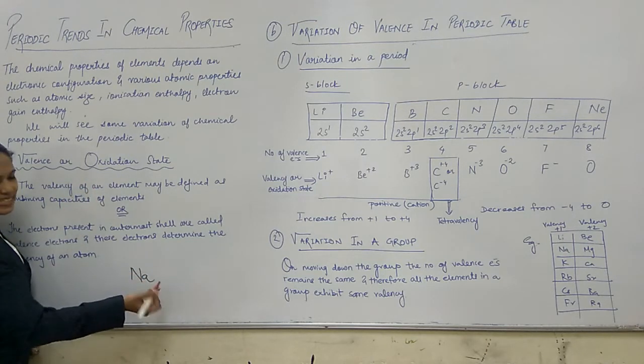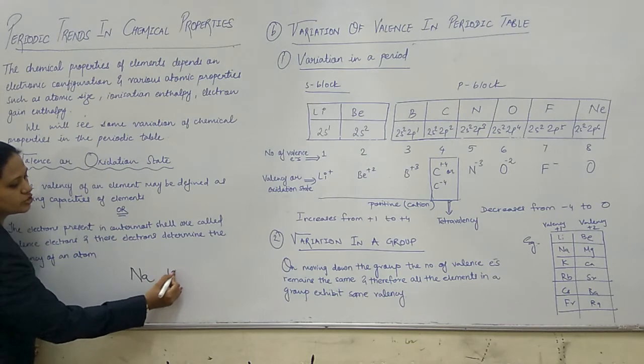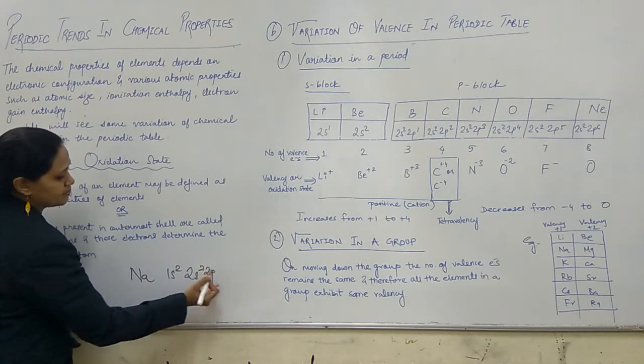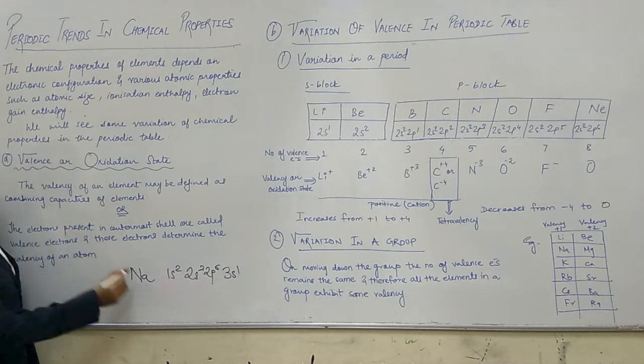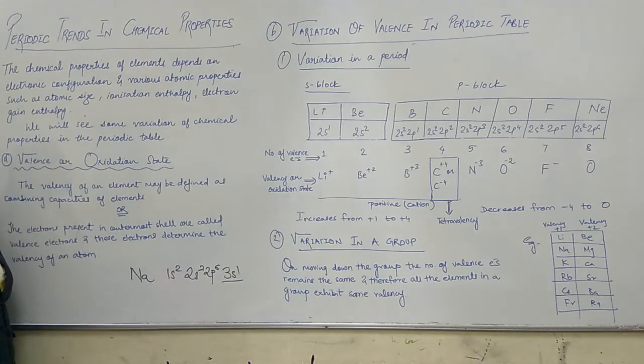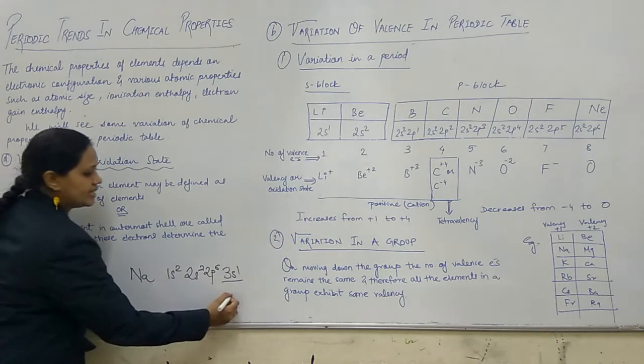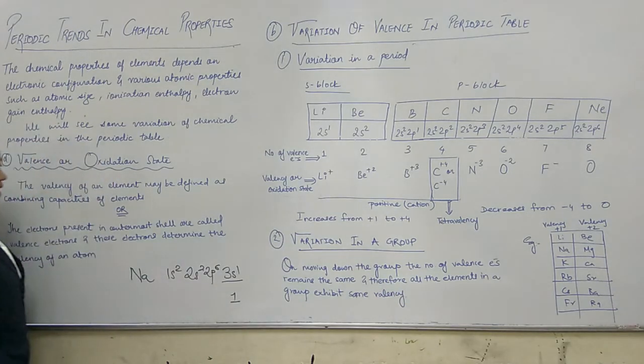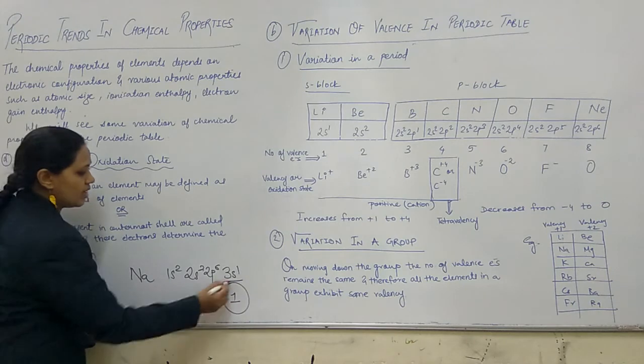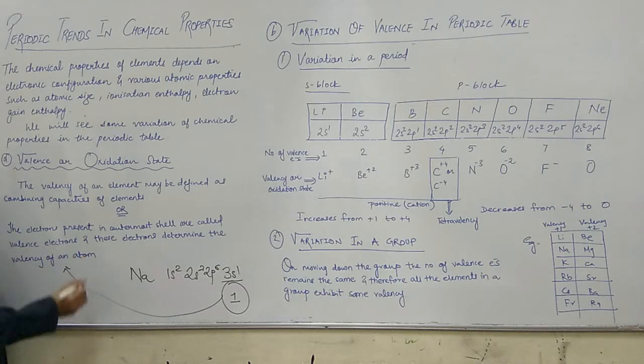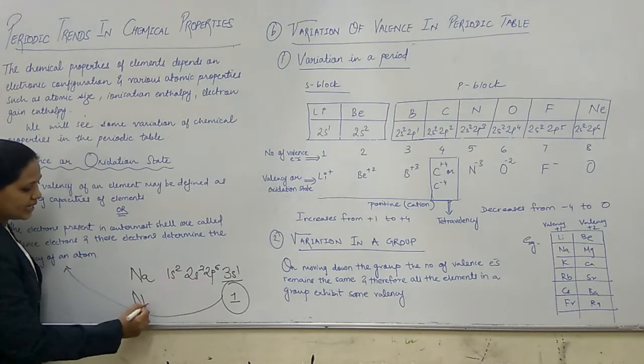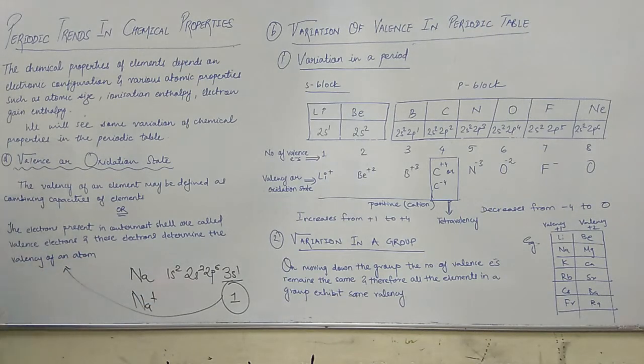For example, sodium has electronic configuration 1s2, 2s2, 2p6, 3s1. The electrons present in the outer shell - here one electron is present - these are the valence electrons. This one valence electron will determine the valency of the atom. So sodium has valency 1, and we get Na+.